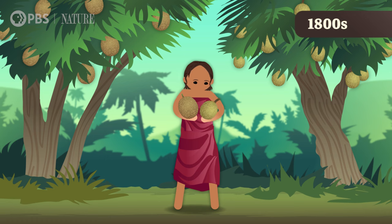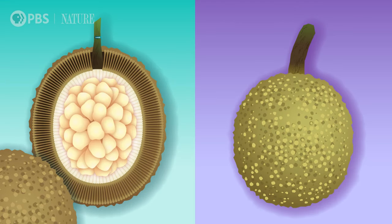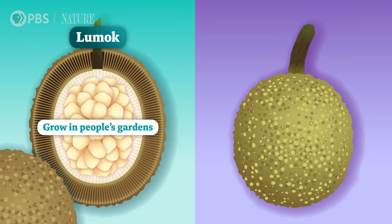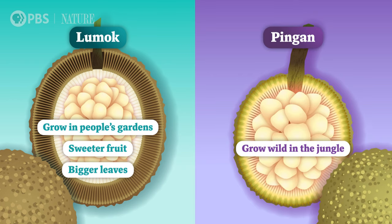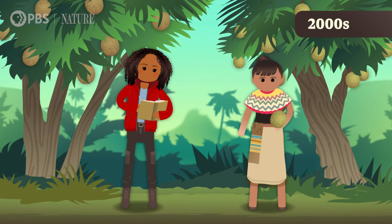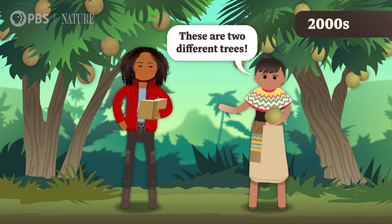But indigenous people in Borneo didn't see them that way. They were way more familiar with these fruits, and to them the fruits came from two completely different plants. The Iban people knew one as Lumok — the cultivated tree that grew in people's gardens with sweeter fruit and bigger leaves. The other was known as Pingon, which grew wild in the jungle and had smaller leaves and fruits. The Desun people agreed that these trees weren't the same and had their own names for them. So after consulting indigenous people, a team of botanists including Iban and Desun researchers decided to analyze the trees' DNA. They confirmed what the indigenous folks had been saying all along — these are two different trees. They're relatives, but they're genetically distinct.